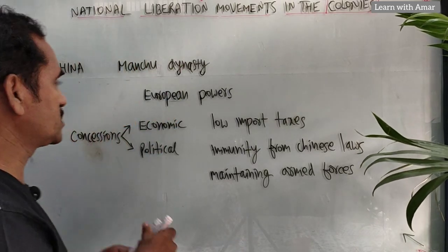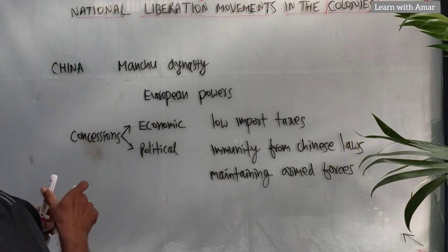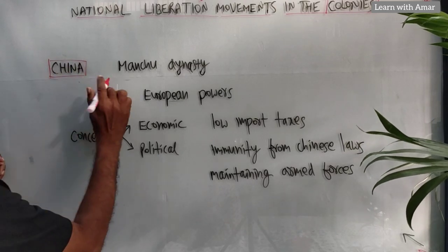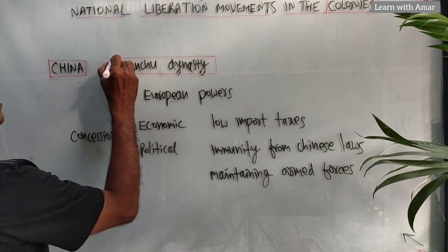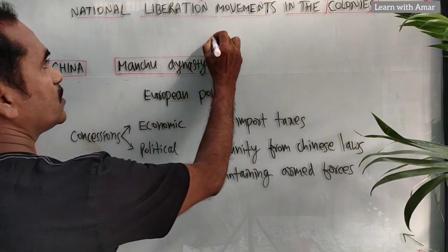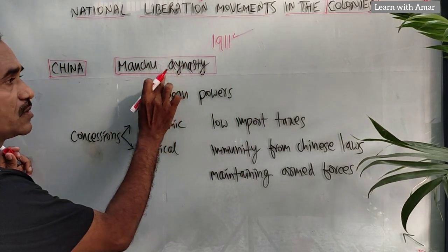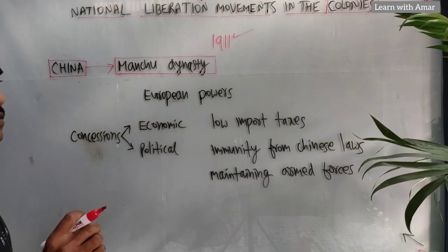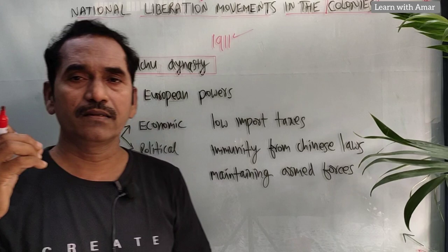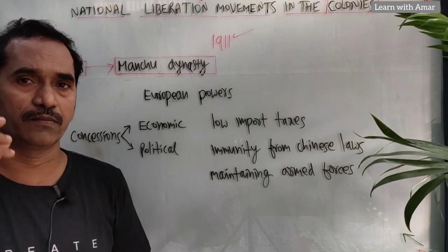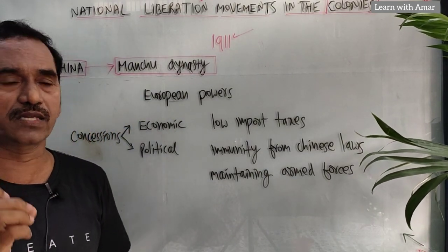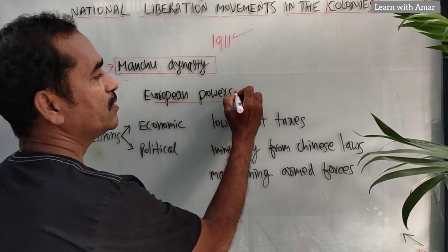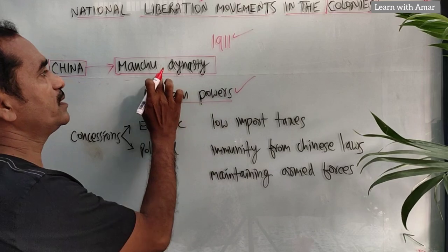During that time, China was ruled by the Manchu dynasty up to 1911. The emperors were in name only, but actually the powers were in the hands of European countries. So European countries became very strong during the Manchu dynasty.